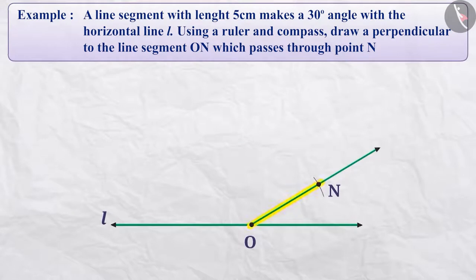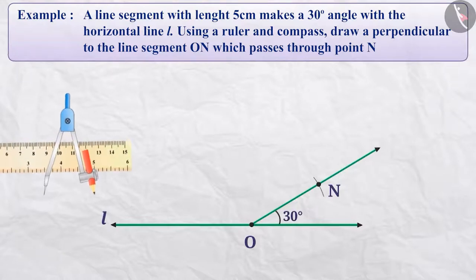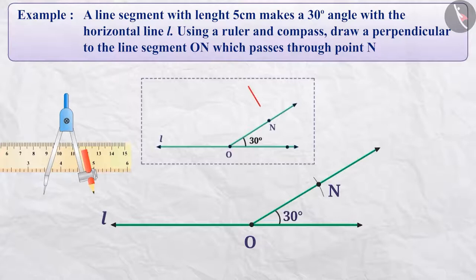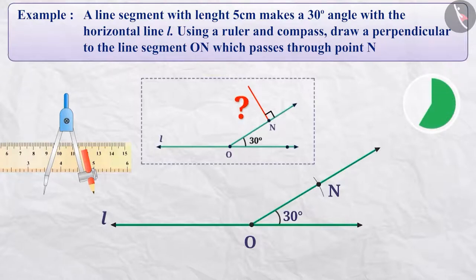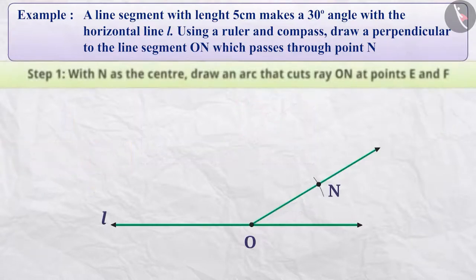In this way, we have drawn a line segment O-N which makes an angle of 30 degrees with the horizontal line. Using a ruler and a compass, let's draw a perpendicular to the line segment O-N which passes through point N. Now, can you tell me how to do this? Think for a while. Let me explain.